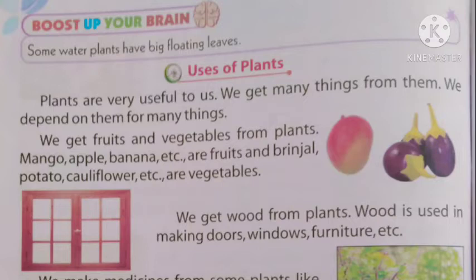Brinjal, potato, cauliflower, etc. are vegetables. बैंगन, आलू, गोभी ये सब vegetables हैं सब्जियों के example हैं। We get wood from plants - हम plants से लकड़ी भी पाते हैं। लकड़ी से ही हम भोजन पकाते हैं। Wood is used in making doors, windows, furniture, etc.